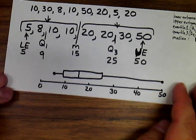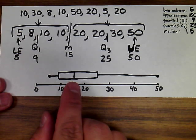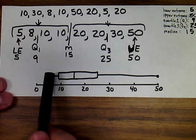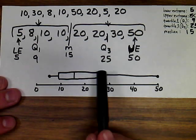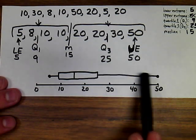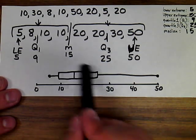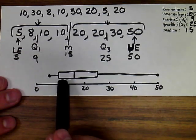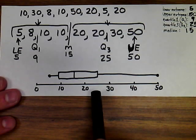A box and whisker graph is great for quickly showing the median and how far data is spread out. Each section of the graph represents 25% of the data. You can see the last 25% is very spread out. In this case, 75% of people making donations gave $25 or less, and only 25% of people made donations larger than that.